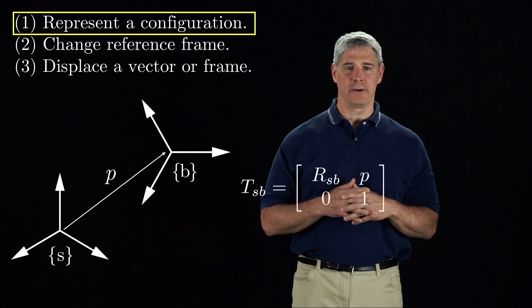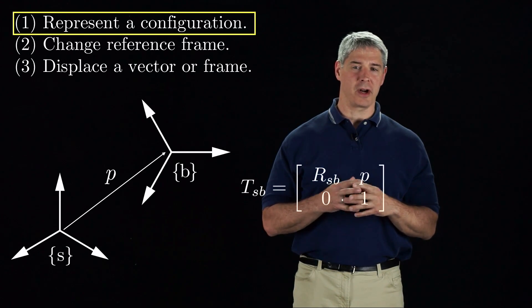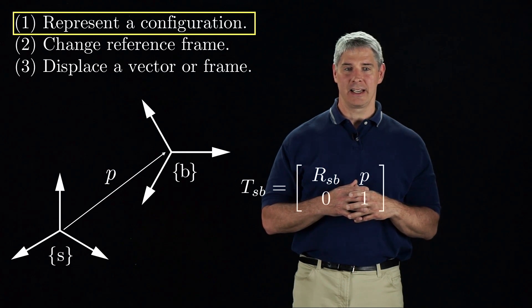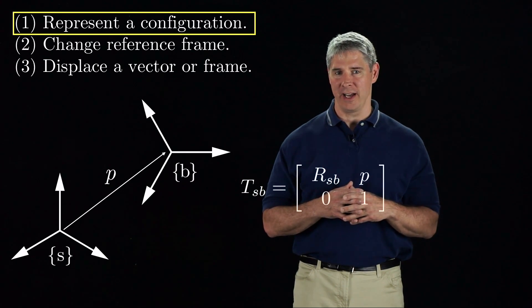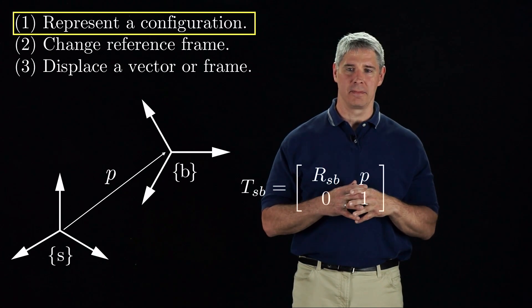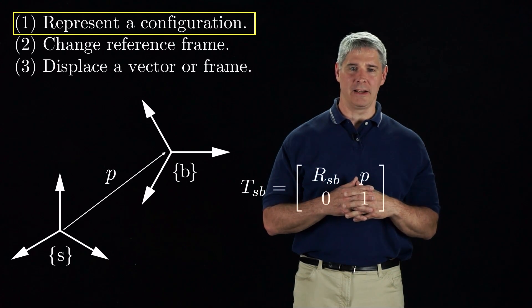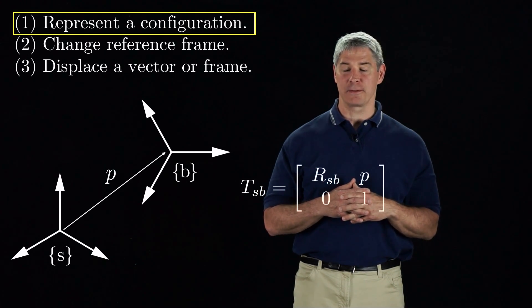To represent a frame B relative to a frame S, we construct the matrix TSB consisting of the rotation matrix RSB, as we saw in previous videos, and the position P of the B-frame origin in S-frame coordinates.